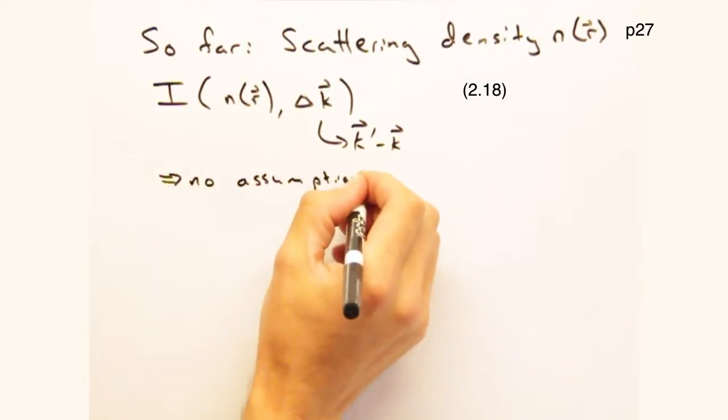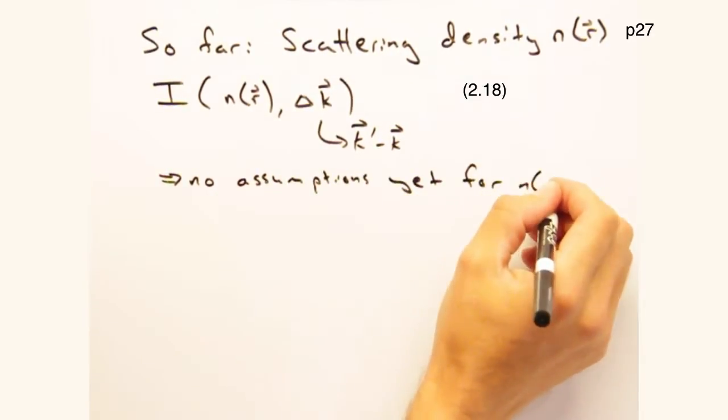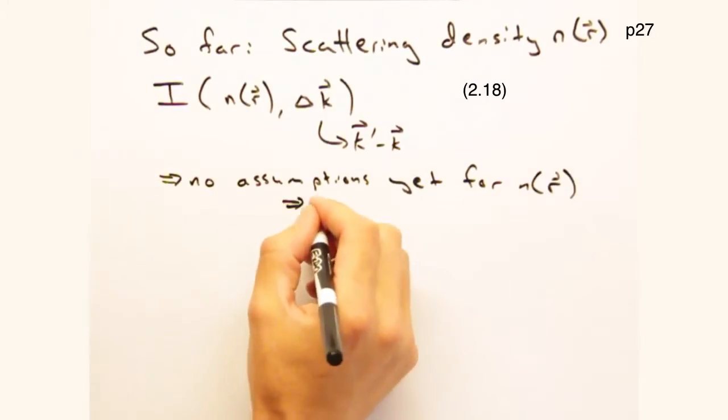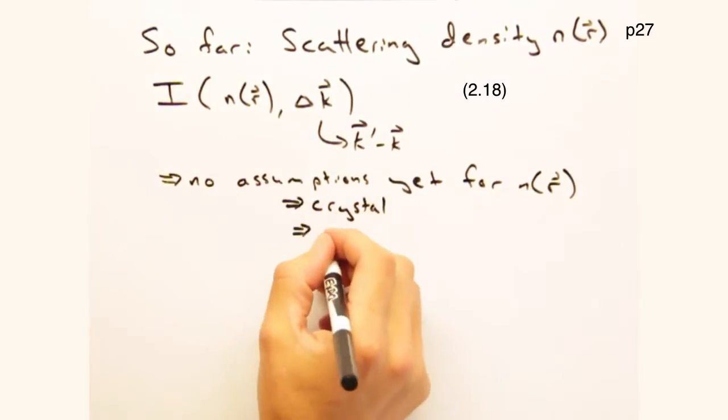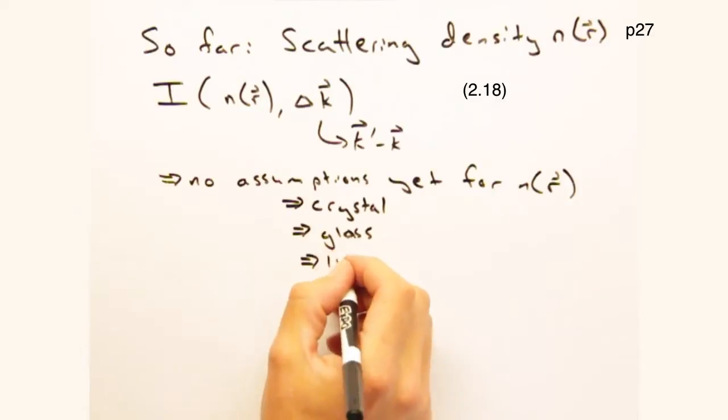And in that process, remember, we made no assumptions about the form of n of r. We could have stuck in a crystal, glass, even a liquid into our diffractometer, and this expression for intensity would still hold.